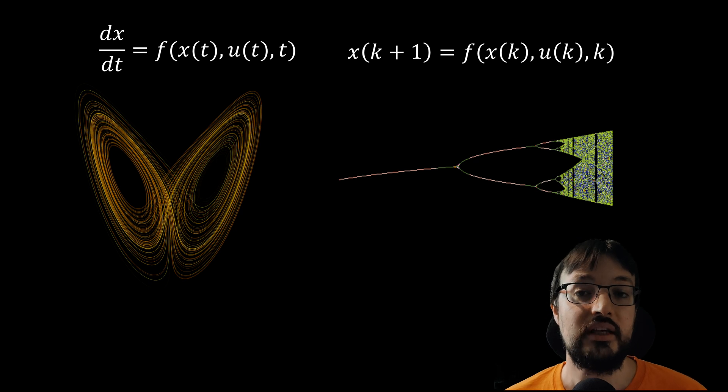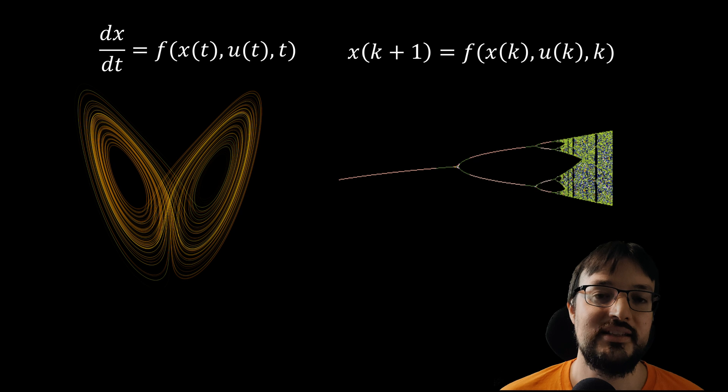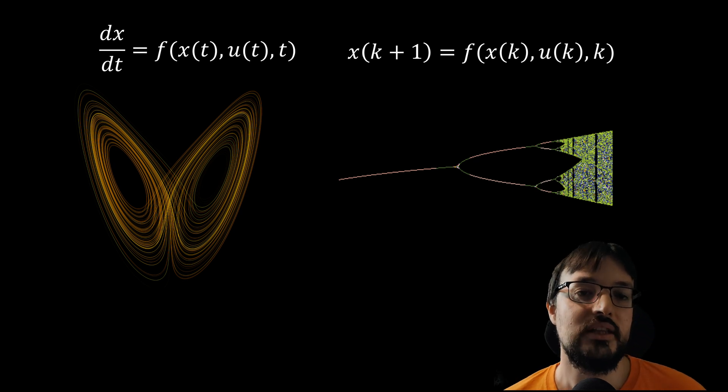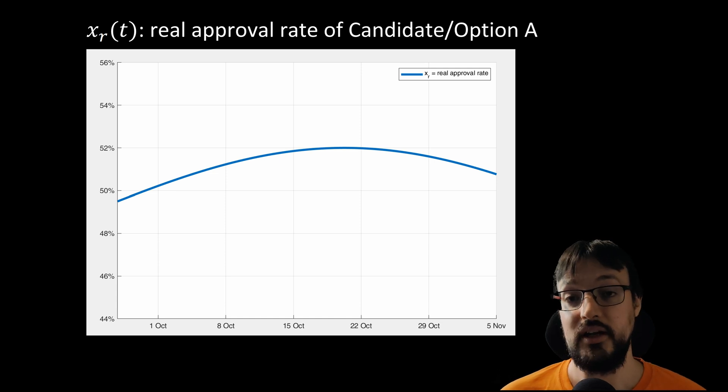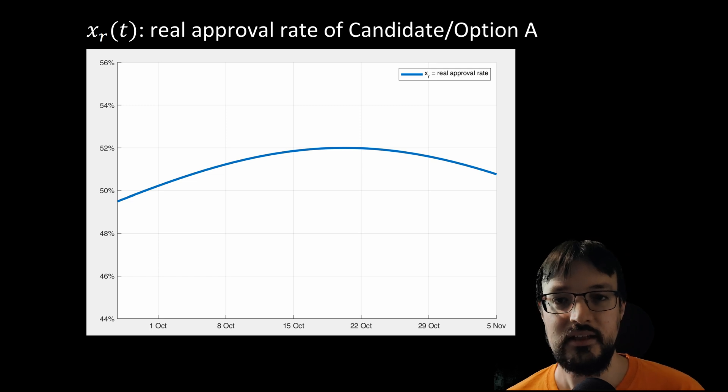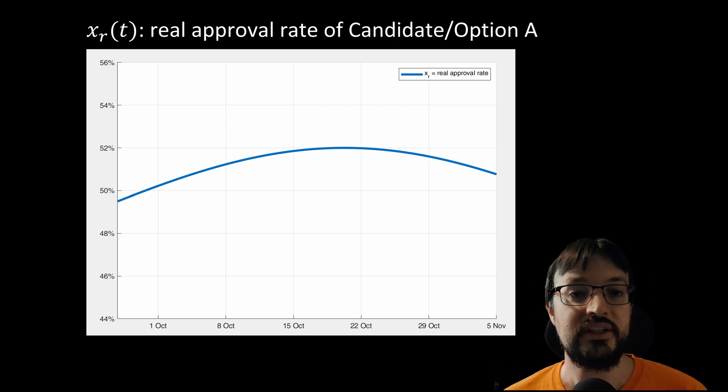So how do we go about creating a meaningful dynamical system from opinion polls? First of all we ask ourselves what is the objective of opinion polls? The objective of polling is to discover the underlying real approval rate of a candidate or option. So first of all let's model such underlying real approval rate. For the purpose of this video we can assume that candidate A has an approval rate that over the last 30 days follows this curve. It oscillates up and down around about 50%. The oscillation is caused by interviews, news, and actions that may change the opinion of parts of the population.